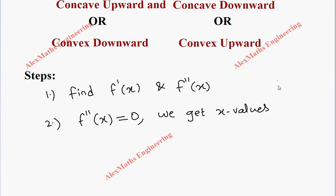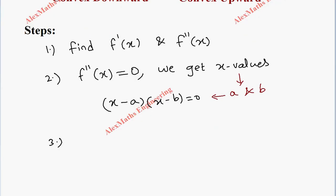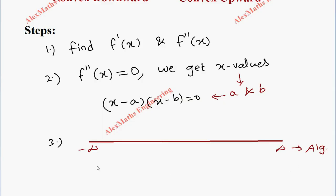Suppose we are getting two values a and b — this comes from the factors (x minus a)(x minus b), which is f''(x) equated to zero. In the third step, we take a number line starting from minus infinity. For an algebraic function it goes from minus infinity; for a trigonometric function it starts from zero to two pi. We then place the two values a and b on the number line.